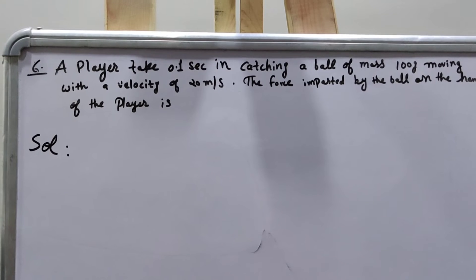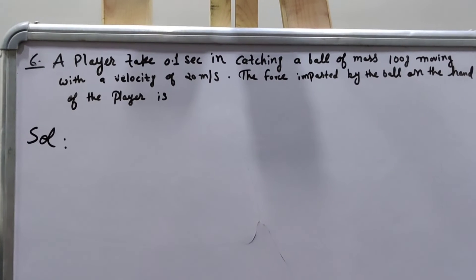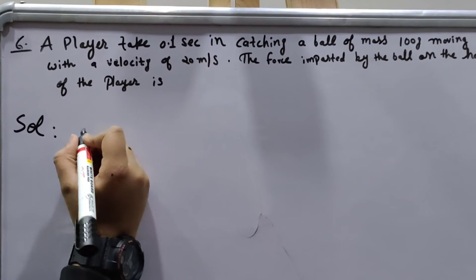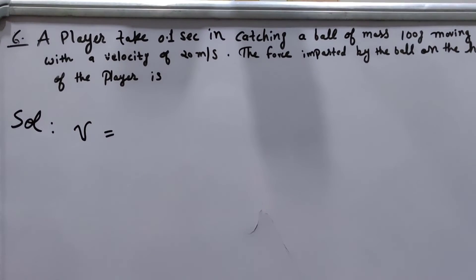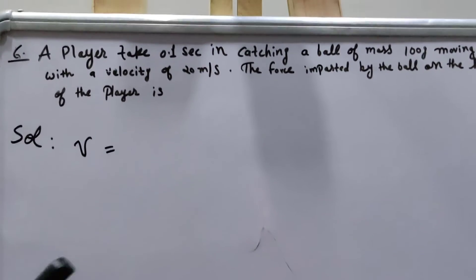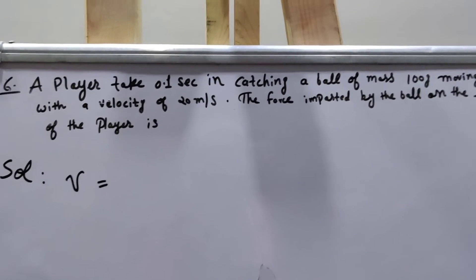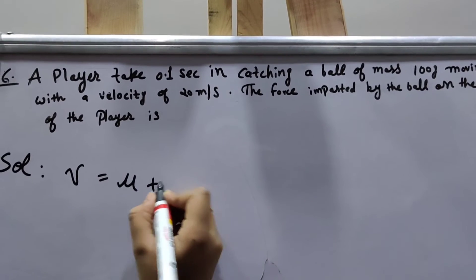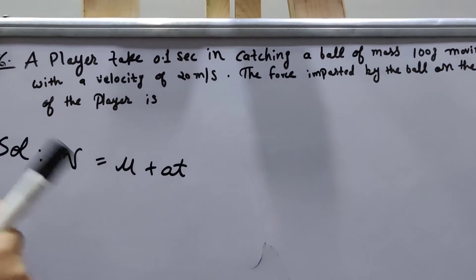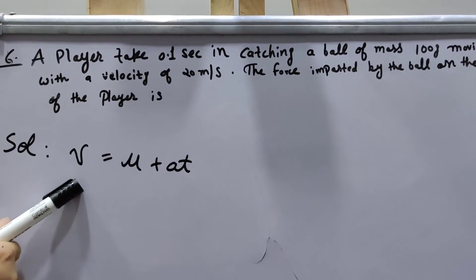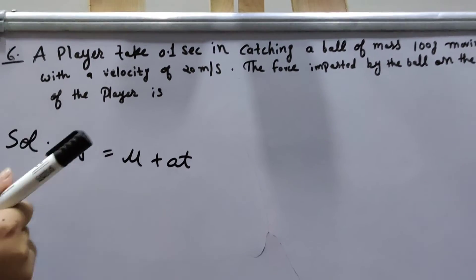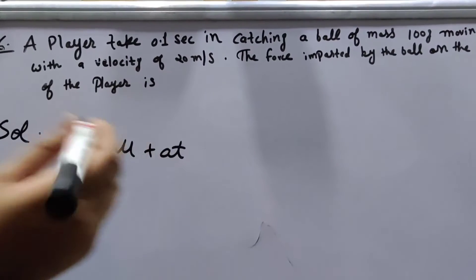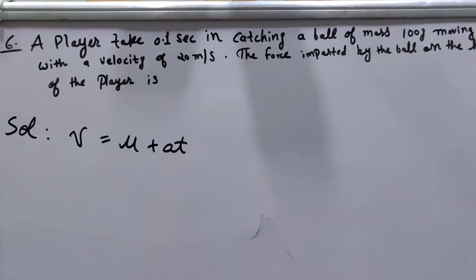So let's apply the formula V equals U plus AT, because force is equal to mass into acceleration and the acceleration is not given. V is our final velocity, U is our initial velocity, A is our acceleration, and T is our time.